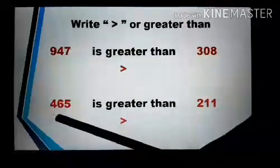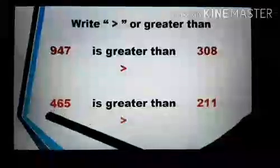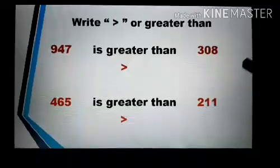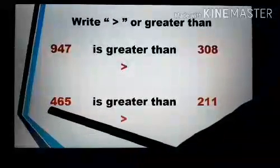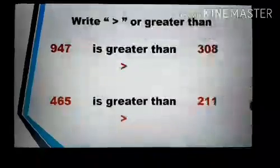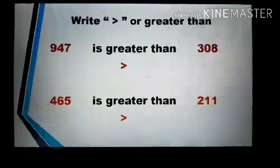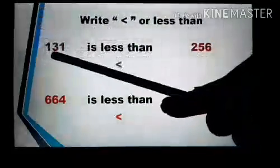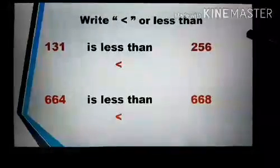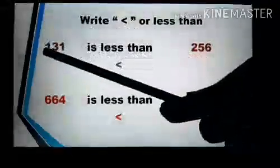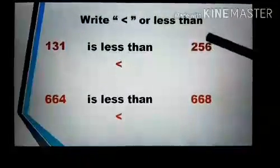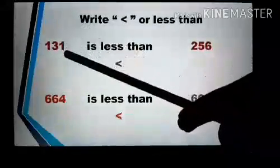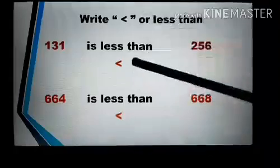Here we have 465 and 211. We compare the first digit: 4 and 2. 4 is greater, so 465 is greater than 211. We use this symbol for greater than. Next, here we have 131 and 256. Compare the first digit: 1 and 2. 1 is smaller than 2, so the number 131 is less than 256. We use this symbol for less than.